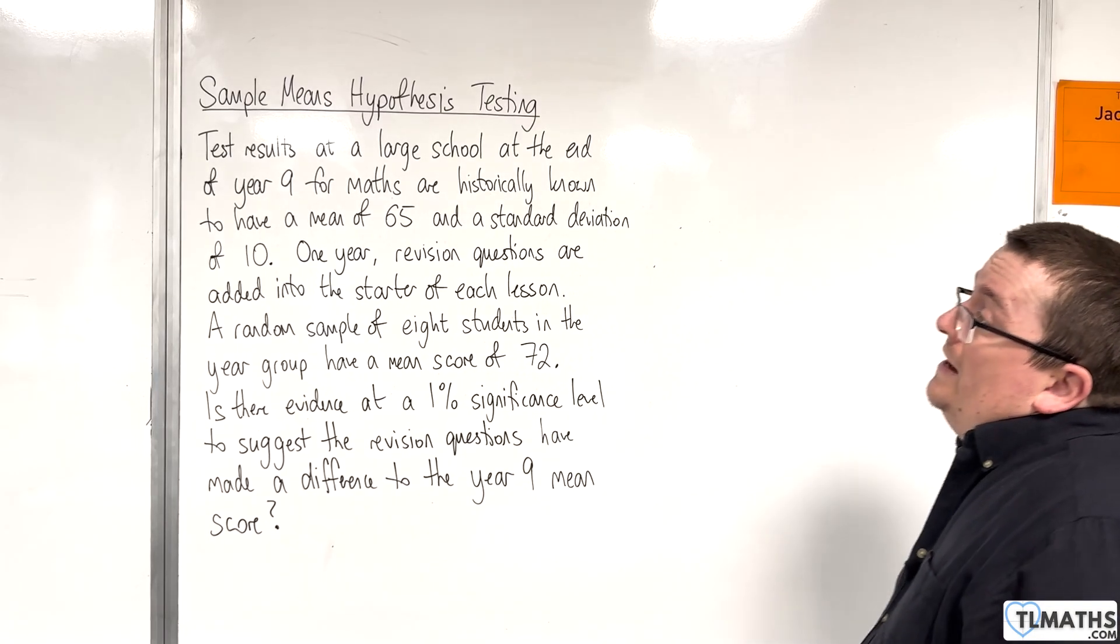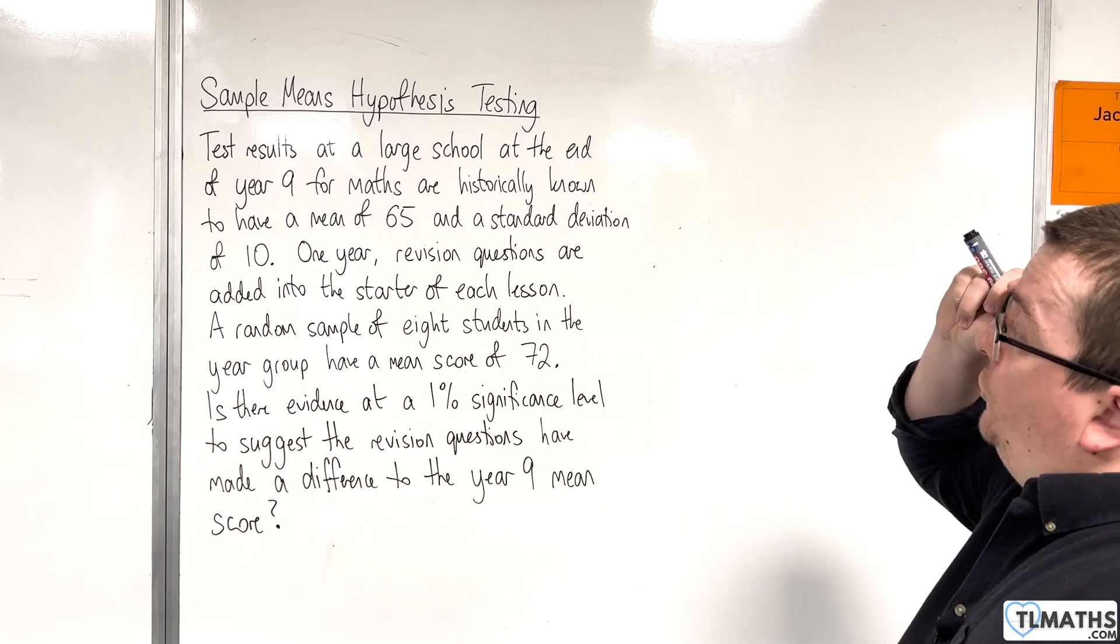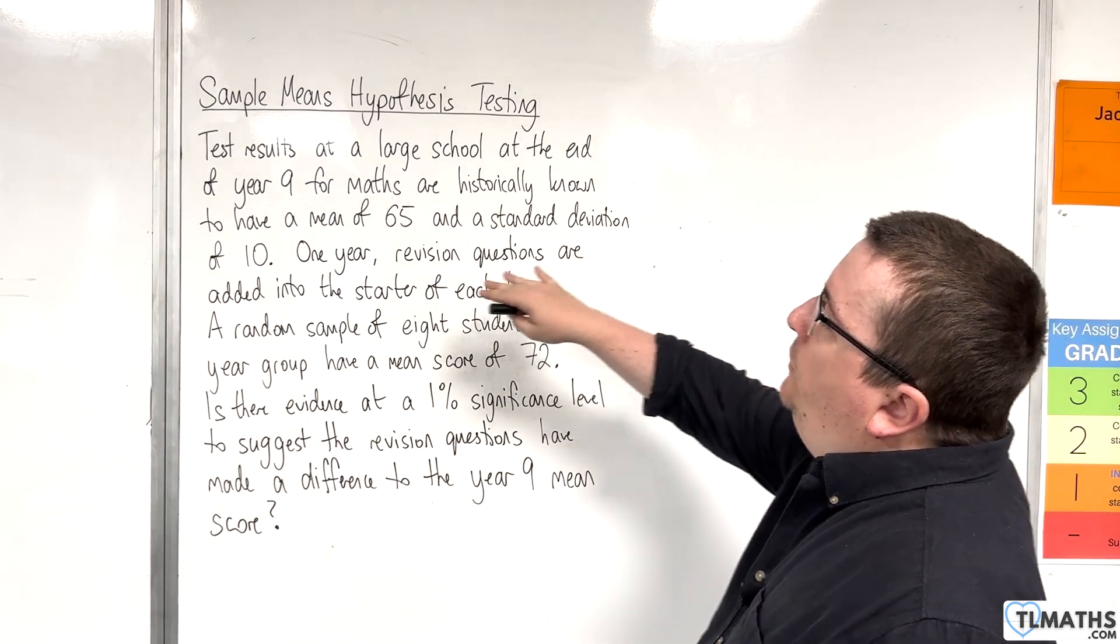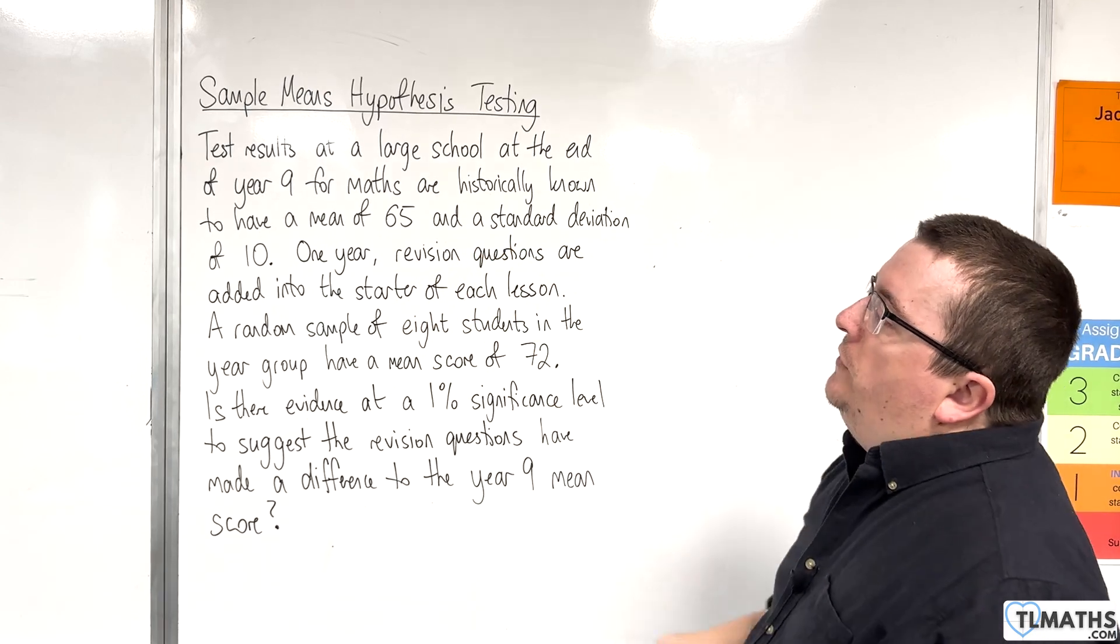So, in this example, we have test results at a large school at the end of Year 9 for maths that are historically known to have a mean of 65 and a standard deviation of 10.